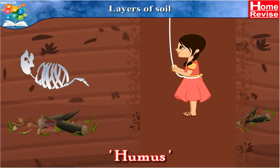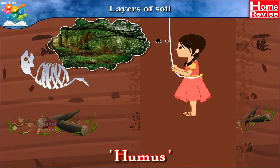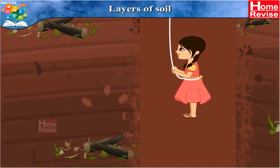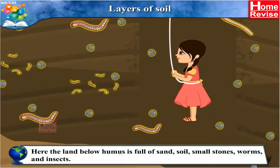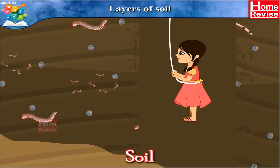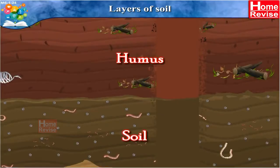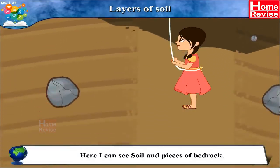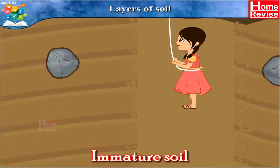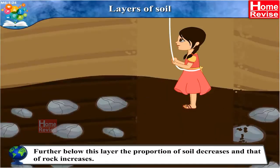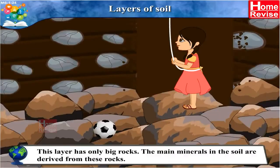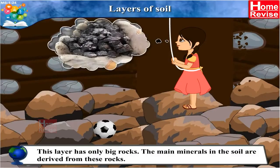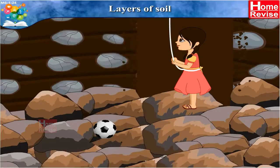The topmost layer of mature soil is called humus, usually found in dense forests. Below humus, the land is full of sand, soil, small stones, worms and insects — this layer is called soil. Further down, there is immature soil with pieces of bedrock. Below that, the proportion of soil decreases and that of rock increases, until there is a layer of only big rocks. The main minerals in the soil are derived from these rocks, which is why soil in different regions is different.